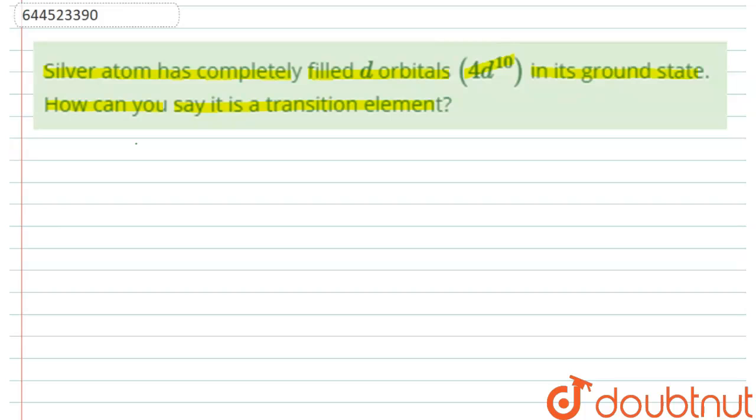So according to the question, silver atom does have a completely filled d orbital in its ground state, but still it is understood as a transition element. So we need to explain the reason for it. Let us try and understand how we can solve this question.